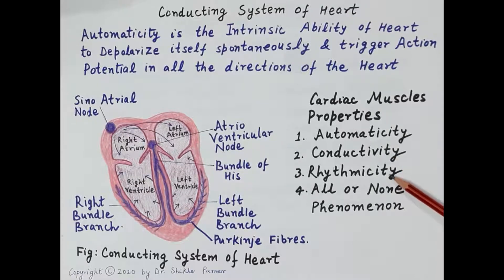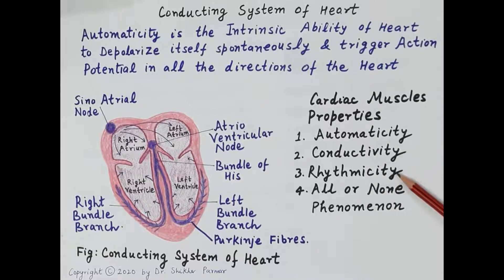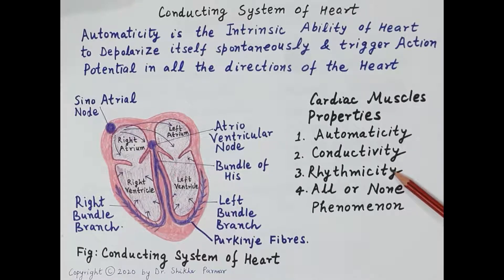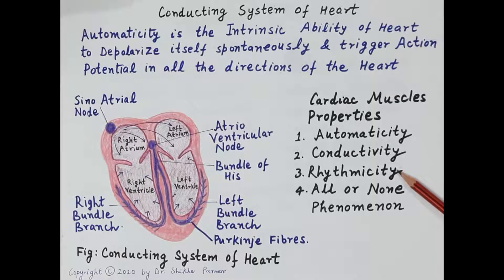The third property is rhythmicity. The properties of automaticity and conductivity together lead to rhythmicity — the heart contracts in a rhythm. On average the SA node generates 72 impulses per minute, and thus the heart beats 72 times per minute. This property of the heart always contracting in a rhythm is termed rhythmicity.